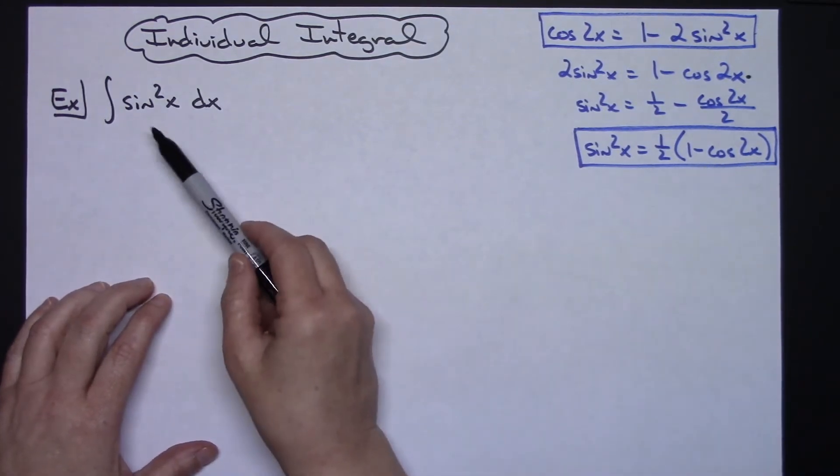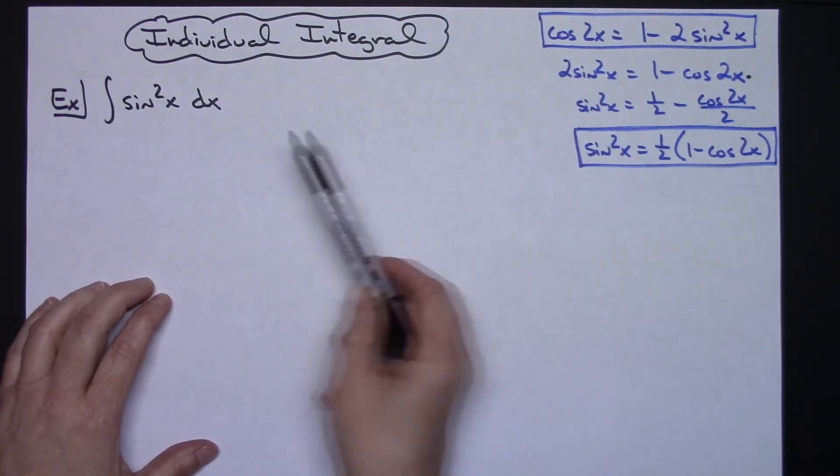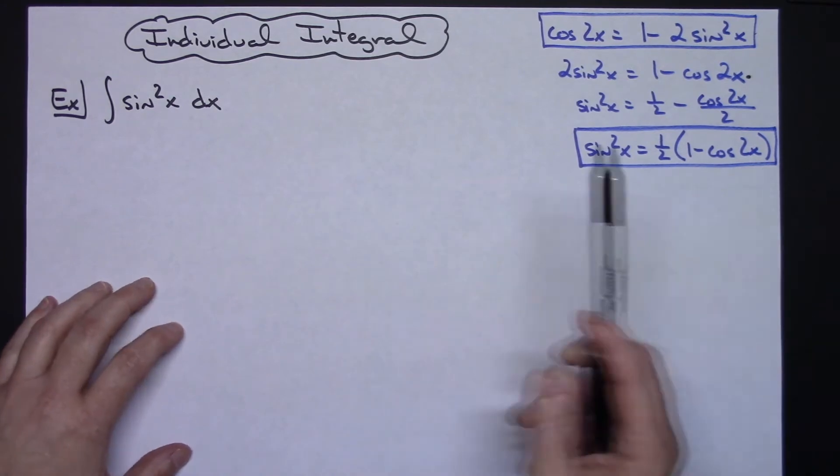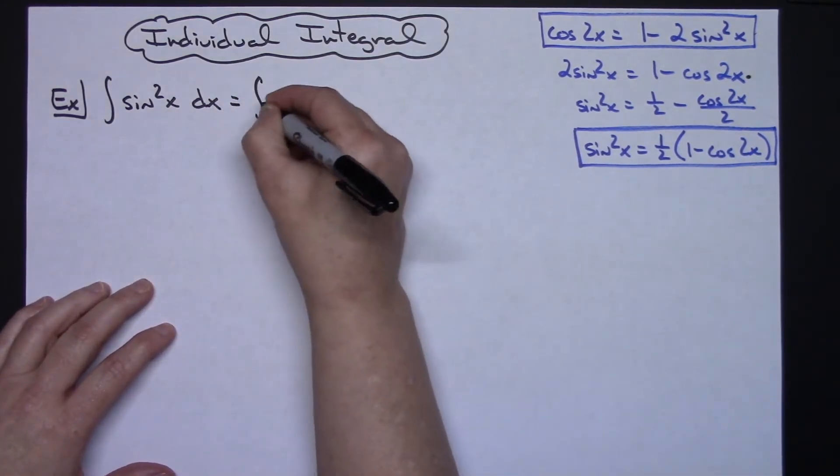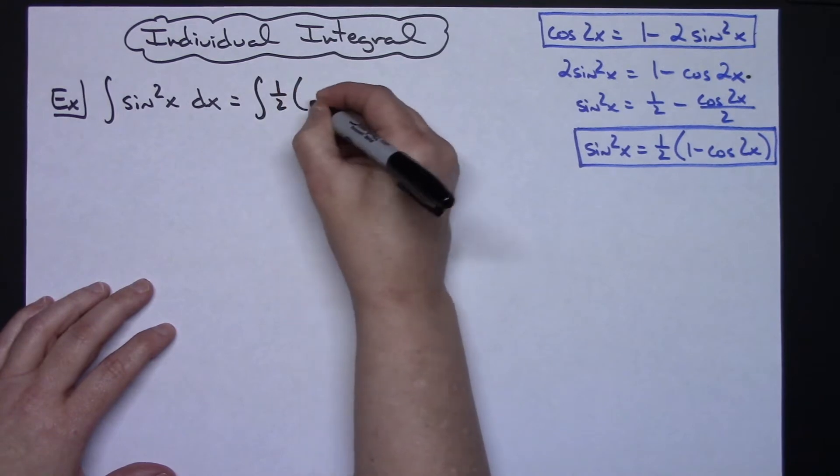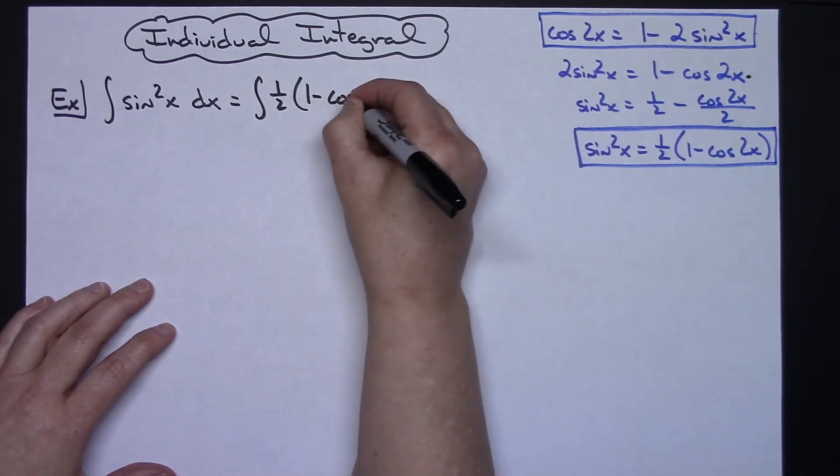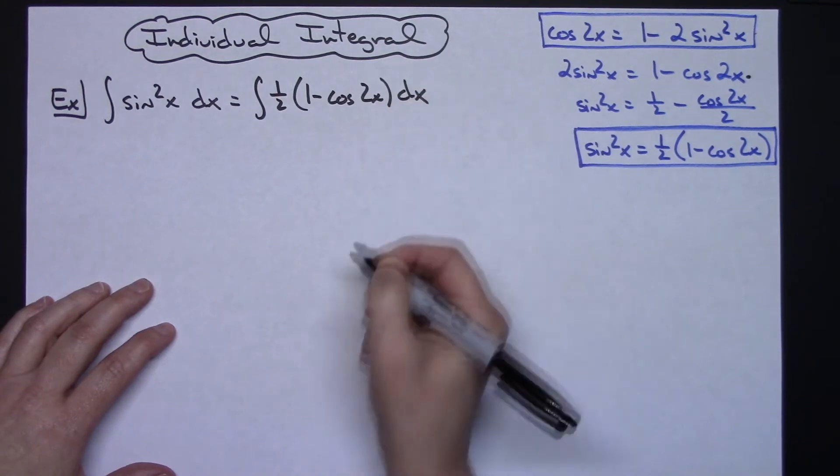That's going to then make this integral a whole lot easier. So the first thing right off the bat I'm going to do is make that substitution. So then I'm going to have the integral of a 1 half times the quantity 1 minus cosine 2x and then dx.